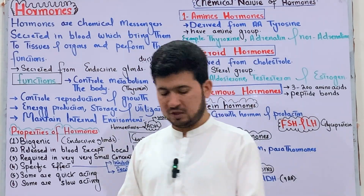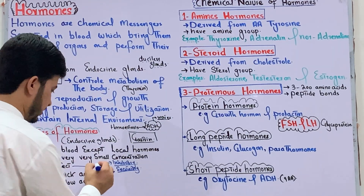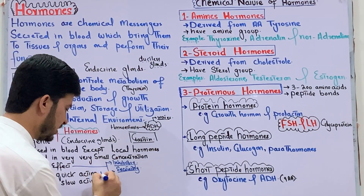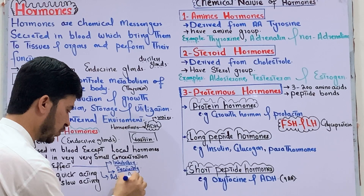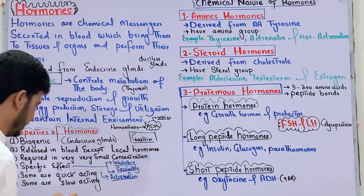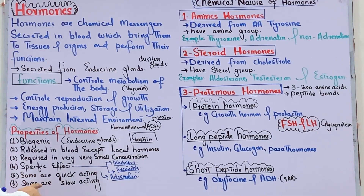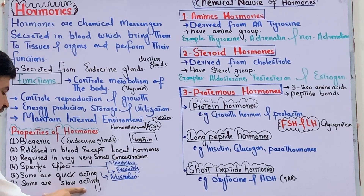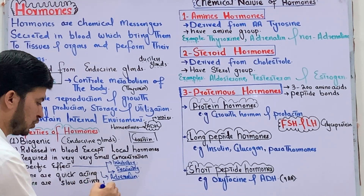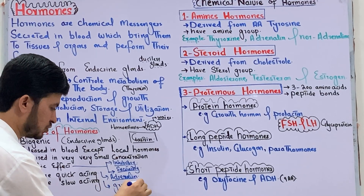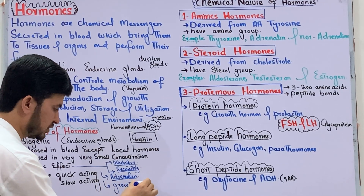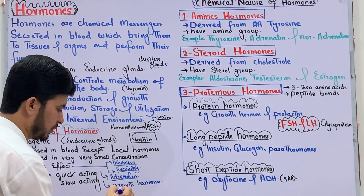Some hormones have excitatory activity, meaning they initiate or start an activity. Another property is that some hormones are quick-acting — for example, adrenaline acts very quickly. Some hormones are slow-acting — for example, growth hormone, whose function is slow.